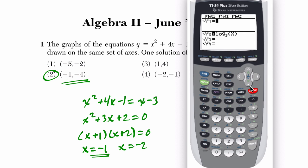So I go to y equals, and I cancel off any old equations. I can enter my parabola, x squared plus 4x minus 1, and my linear equation, x minus 3. And I'm going to press zoom 6 to get a standard zoom on my graph. That's the parabola.